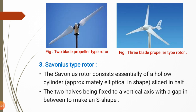The first two types — the multi-blade type rotor and the propeller type rotor — are used in horizontal axis wind machines. The third and fourth types are used in vertical axis wind machines. The third type is the Savonius type rotor.